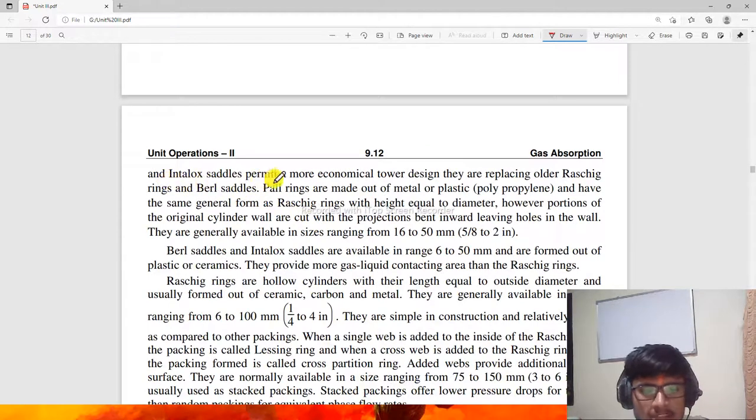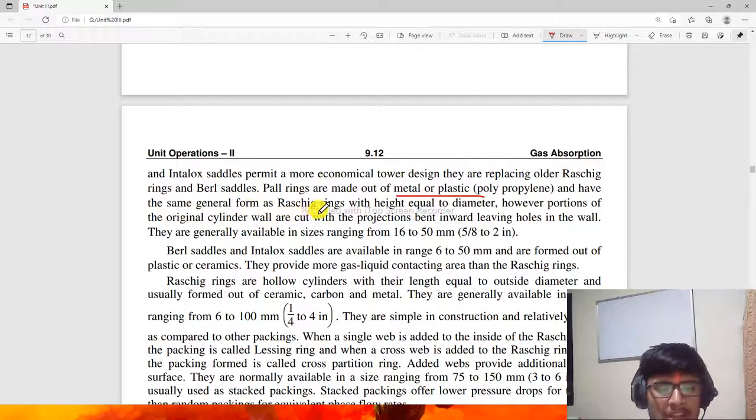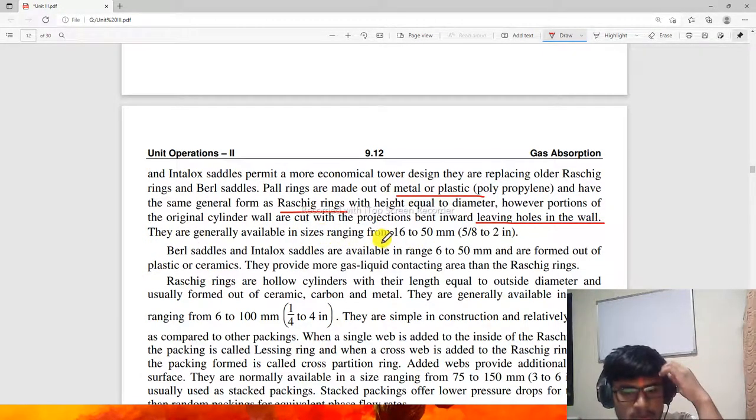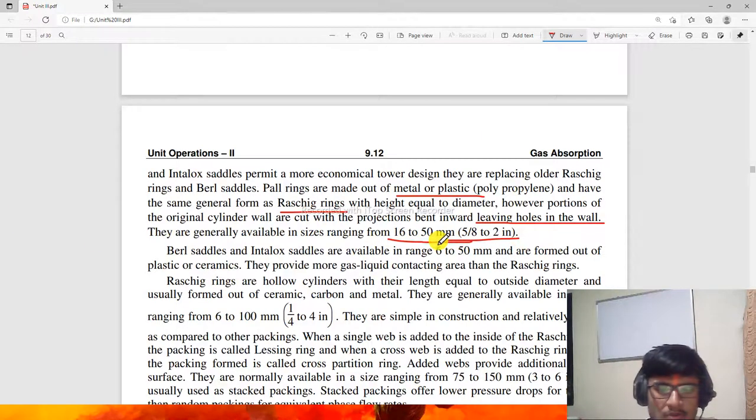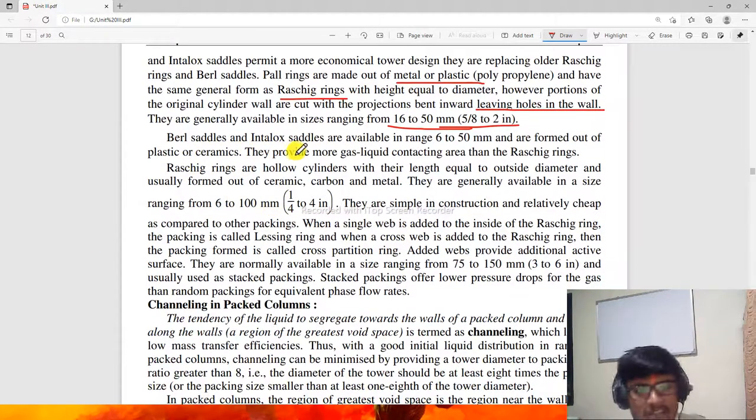Pall rings are now replacing older Raschig rings and Berl saddles. Pall rings are made of metal or plastic and have the same general form as Raschig rings. They are generally available in sizes ranging from 16 to 90 mm, or 5/8 to 3.5 inches. Berl saddle or Intalox saddle are available in the range of 6 to 50 mm.